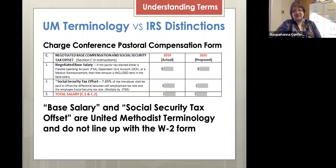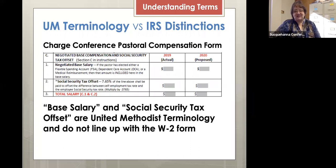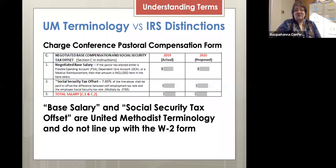Another place I have found confusion is simply what we call things on our pastoral compensation form. On the charge conference form where pastoral compensation is figured out, we have what we call the negotiated base salary and what we call the Social Security Tax Offset. Those terms do not line up with terms on the W-2 form or other IRS terms. I've seen church treasurers take what's listed as Social Security Tax Offset and put it in the boxes on the W-2 for Social Security Tax, which leads to a lot of problems in filling out someone's 1040 form. Don't confuse United Methodist terminology with IRS terminology.